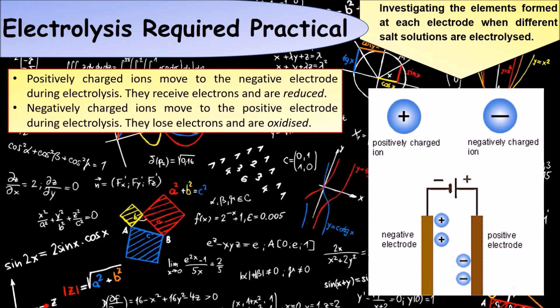Positively charged ions move to the negative electrode, where they receive electrons and are reduced. Negatively charged ions move to the positive electrode, where they lose electrons and are oxidized.